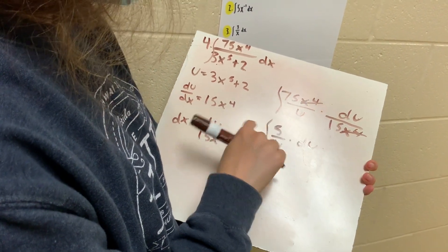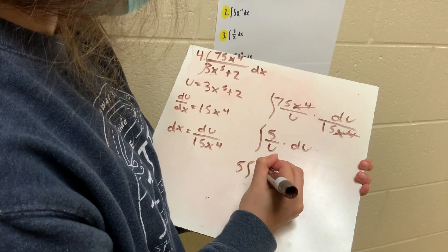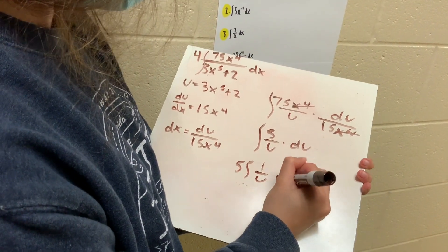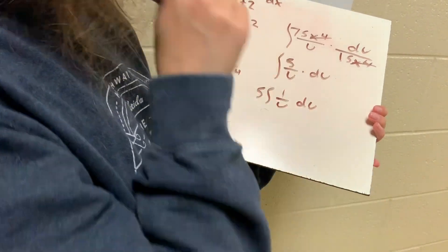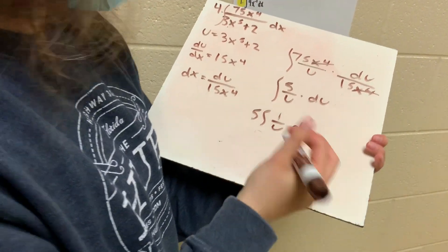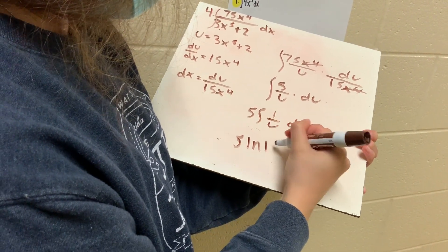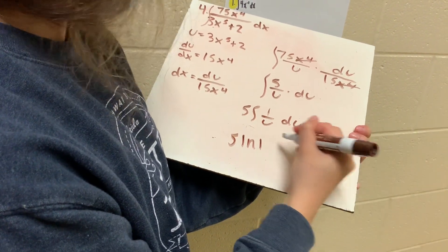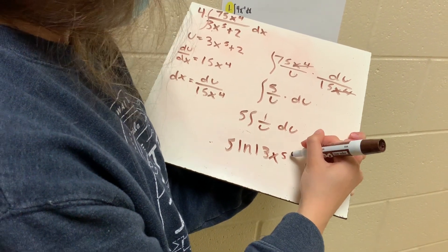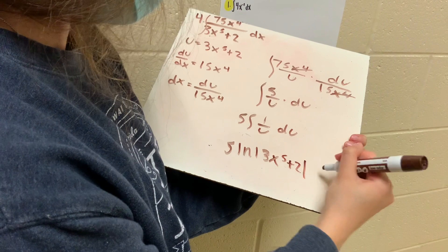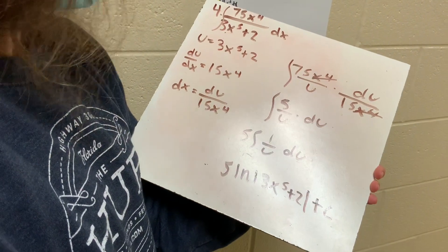Then with that 5, you can take it out in front of the integral, so it would be 5 times integral of 1 over u du. And then you're ready to use the formula to plug it all back in. So that would be 5 ln of 3x to the fifth plus 2 — because that is the u — plus c. And that is how you do number 4.